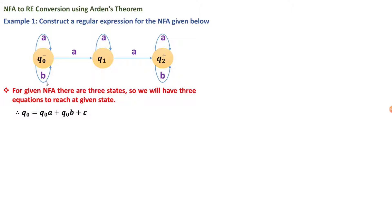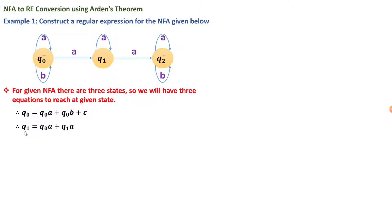Similarly, from state q0 on reading 'b' we go back to q0. Since q0 is the initial state, we also include a null (epsilon) transition, because the starting state is reached from nowhere — there is no prior state leading to it. This epsilon transition is only added for the starting state.